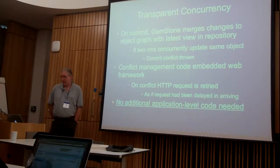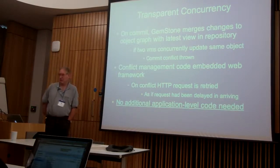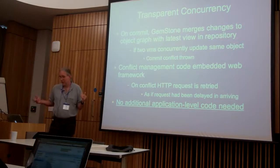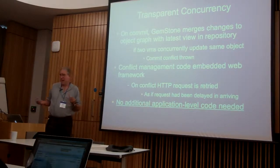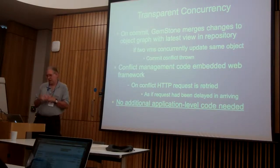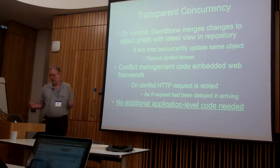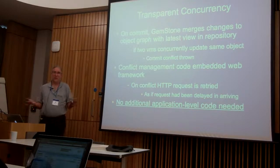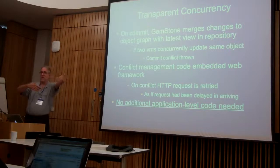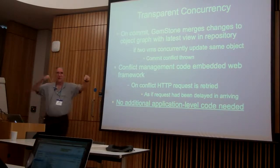Transparent concurrency: on a commit, Gemstone merges the changes to an object graph with the latest view of the repository. If two VMs have concurrently updated the same object, a commit conflict is thrown. That commit conflict code is embedded in the framework, not in your application. When there's a conflict, the HTTP request is retried. So basically, two requests come in at the same time, and one finishes before the other.